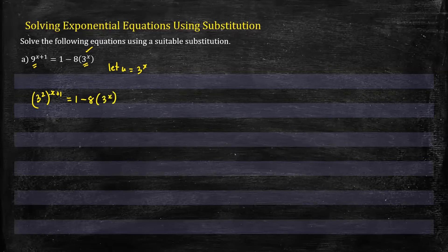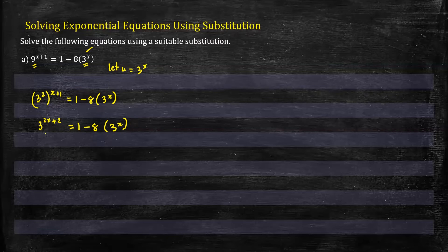On this side we'll expand our exponent, so we'll have 3 times 2x which is 2x, and 2 times 1 is 2. This equals 1 minus 8(3^x). Now I'll expand this left side. I have 3^(2x) multiplied by 3 squared, which equals 1 minus 8(3^x).